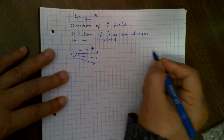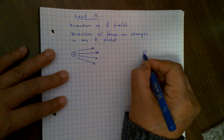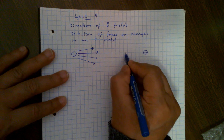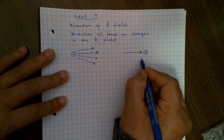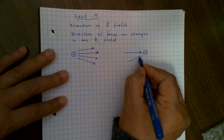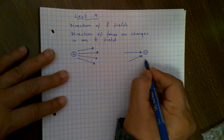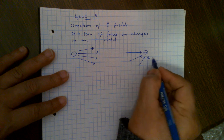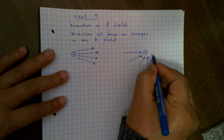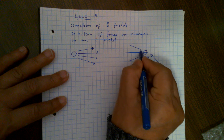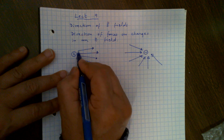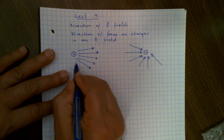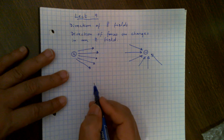If you have a negative charge, then electric field lines are coming towards it. So these are the electric field lines pointing towards the negative charge. For positive charge, they are going away from the charge. For negative charge, they are coming in towards the charge.